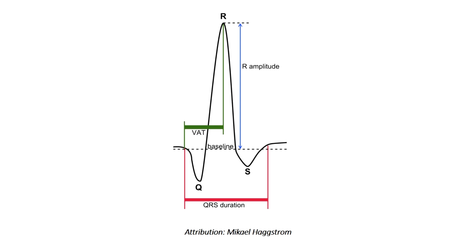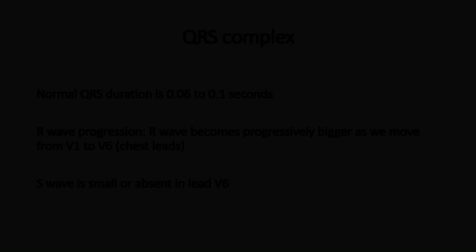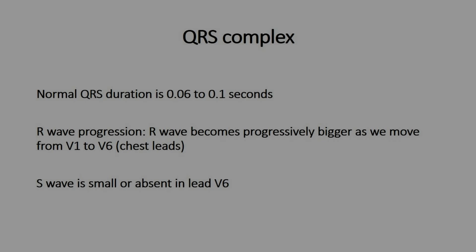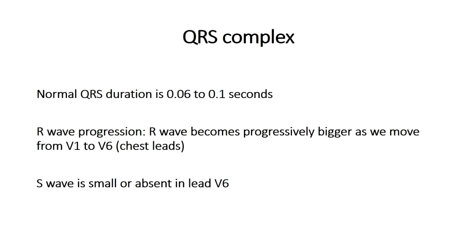How long should a QRS complex last? When you look at the ECG paper it should last between one and a half to two and a half small boxes, or between 0.06 to about 0.10 seconds.